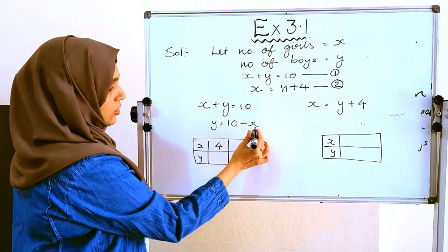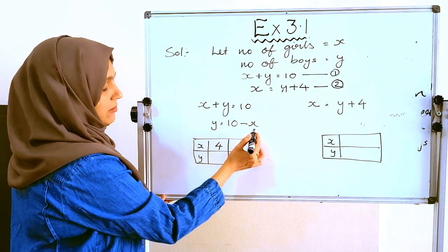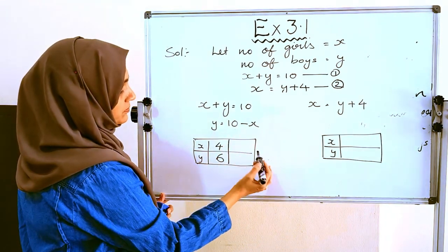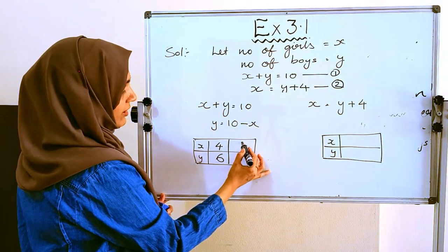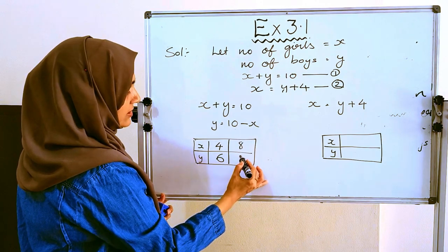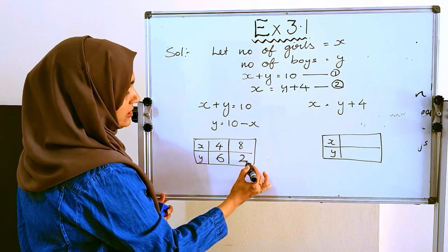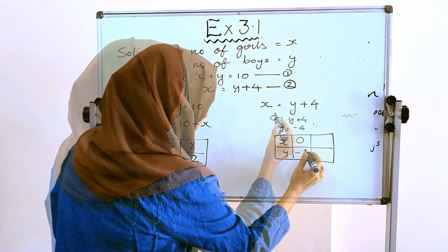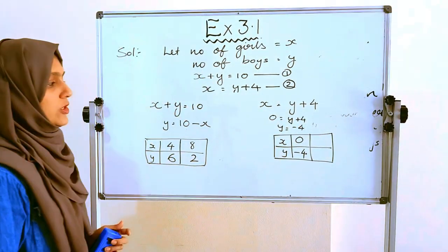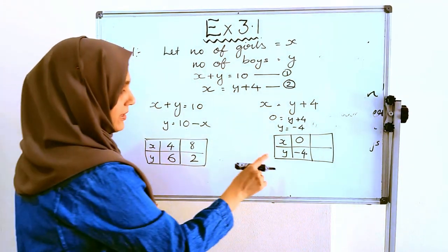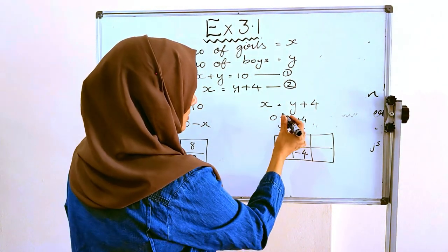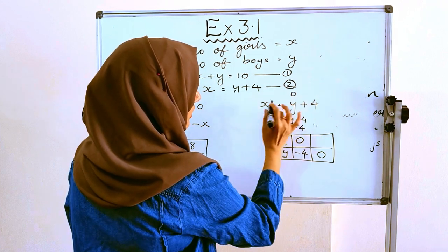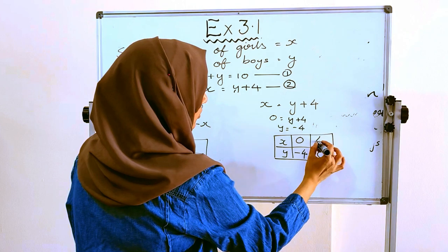When x equals 4, y equals 10 minus 4, which is 6. When x equals 8, y equals 10 minus 8, which is 2. For the second equation, when x equals 0, y equals minus 4. When y equals 0, substituting gives x equals 4.